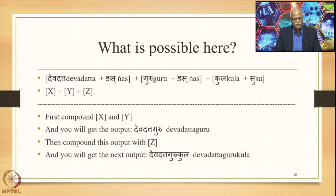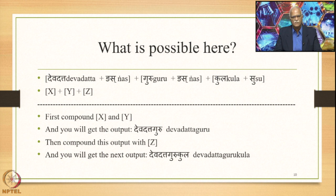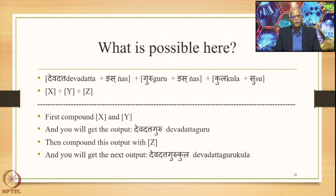What is possible here is the following: if you have Devadatta plus Gnas plus Guru plus Gnas plus Kula plus Su — the format X plus Y plus Z — first compound X and Y, and you get the output Devadatta Guru, meaning the teacher of Devadatta. Then compound this output with Z, and you get the next output Devadatta Guru Kula — a perfectly semantically linked and Samartha-capable compound. But if you don't do this and instead say Devadattasya Guru Kula, then there is the problem of Asamartha Samasa, if the intended meaning is the family of the teacher of Devadatta.